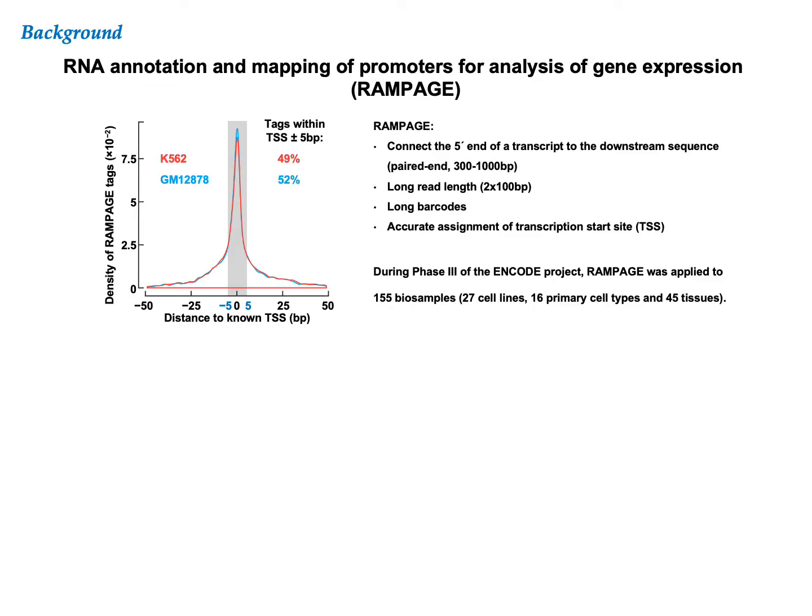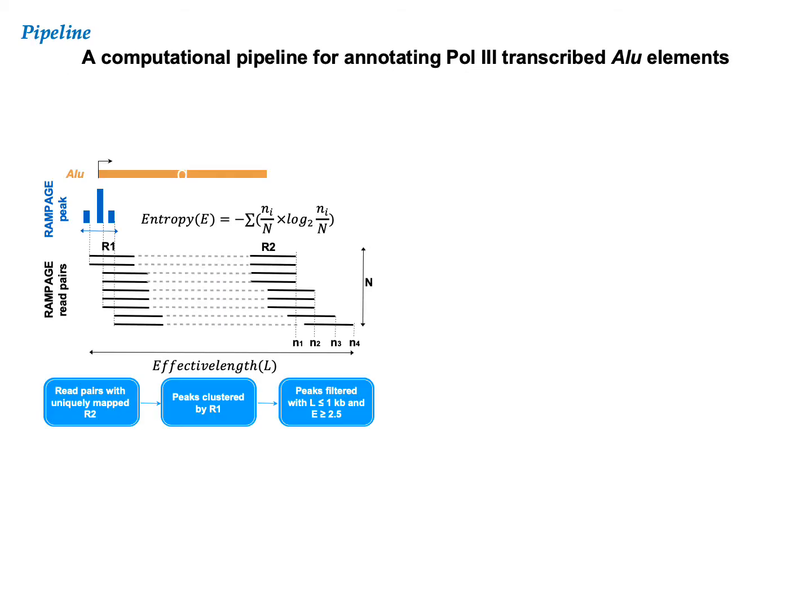RAMPAGE is a paired-end sequencing technique that connects the 5' end of transcripts to regions that are 300 to 1000 base pairs downstream. RAMPAGE reads are highly concentrated at the transcription start sites, abbreviated as TSSs from now on. We built a computational pipeline to identify individual Alu elements using RAMPAGE data.